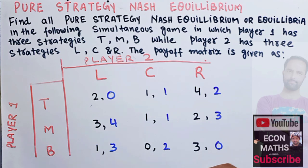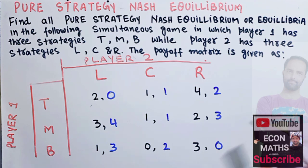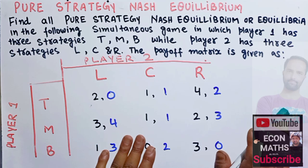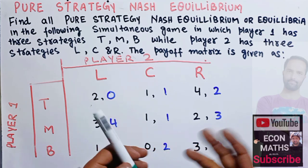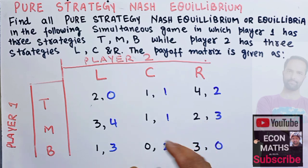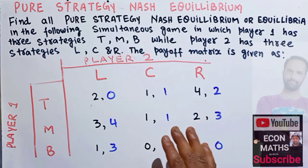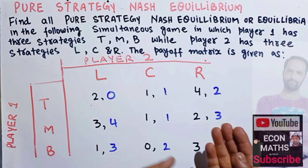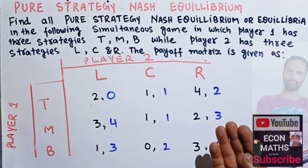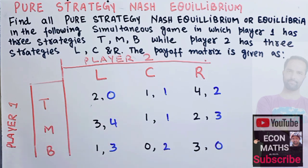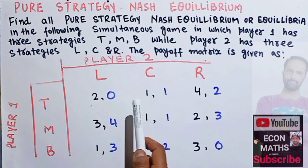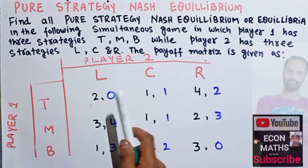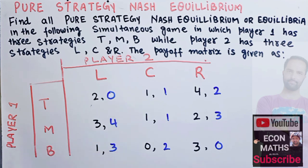We need to find the Nash equilibrium or Nash equilibria if we have more than one. Nash equilibrium is a concept from game theory where the optimal outcome is one where no player has an incentive to deviate from their initial strategy. Each player chooses the strategy that maximizes their expected payoff given the strategies of the other player.